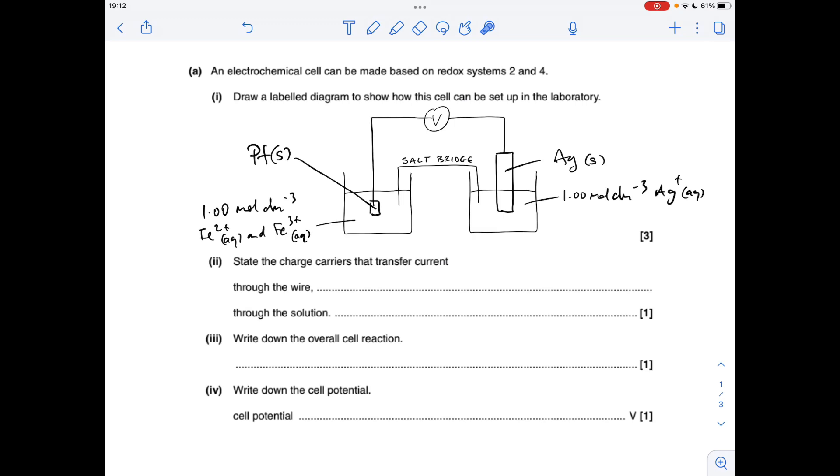So the diagram for systems 2 and 4, I've put the Fe2+ Fe3+ half cell on the left hand side, doesn't matter which way around you do it. In that beaker I've got one mole per decimeter cubed solutions of Fe2+ and Fe3+ with a platinum electrode.